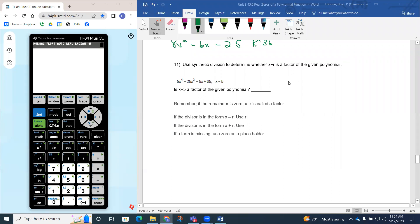Question 11 says use synthetic division to determine whether x minus r is a factor of the given polynomial. One thing to pick up on is if the divisor is in the form of x minus r, we use r. If we have x plus r, we use the opposite of r. Notice how we have x minus 5 as our divisor, so our r is going to be 5.